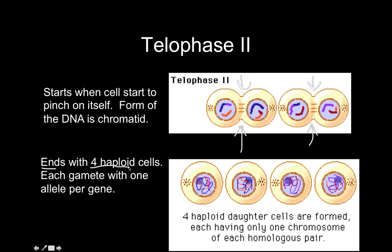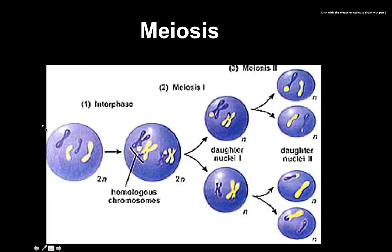The last part of meiosis is telophase two, which starts as the cells pinch down on themselves again. Telophase two ends with four haploid cells — all still 1n — each is a gamete with one allele per gene. For example, using eye color: one cell might have a brown eyes allele, another blue eyes, and so on. Four haploid daughter cells are formed, each having only one copy of each chromosome and one allele per gene.